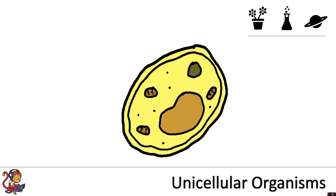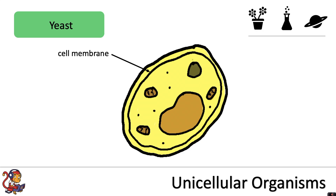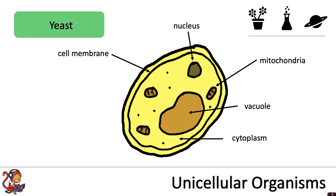The second cell that we will look at that exists as a single cell is yeast. Yeast is a type of fungus and you'll probably be able to recognise many of the same features that you'll find in animal or plant cells, including a cell membrane, a nucleus, mitochondria, a vacuole, cytoplasm, ribosomes and a cell wall.